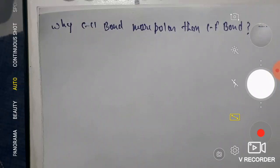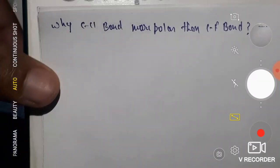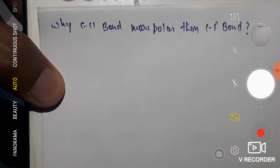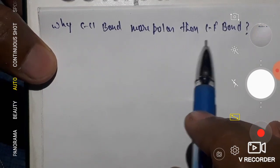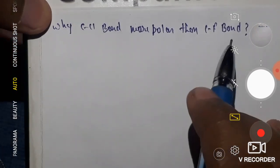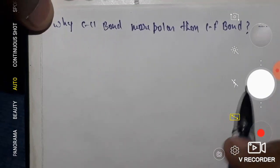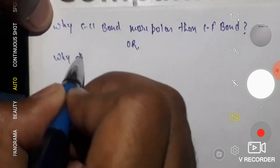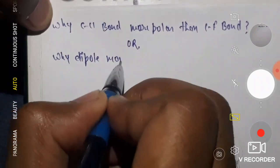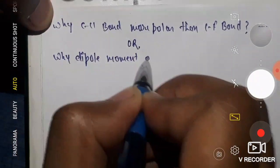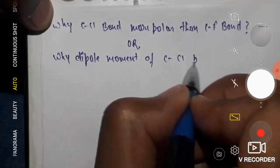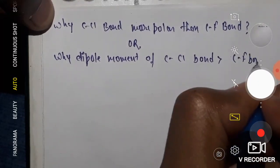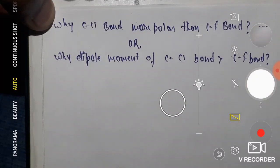Hello students, welcome to today's class. In the last lecture we were talking about why the dipole moment of the C-Cl bond is more than the dipole moment of the C-F bond. We can also phrase this as: why is the dipole moment of the C-Cl bond greater than the dipole moment of the C-F bond?